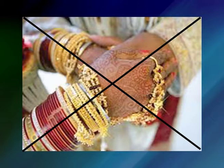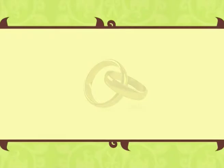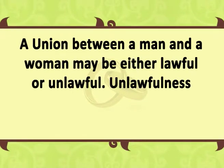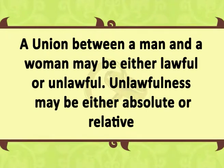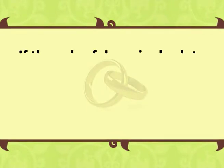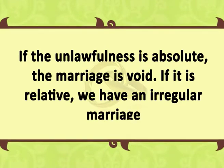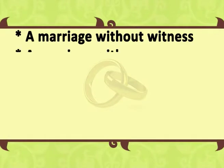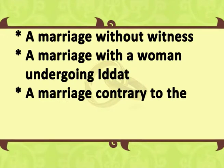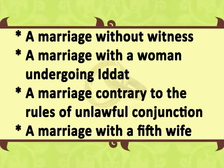Irregular marriage: a marriage is irregular when there is no permanent bar to a marriage. A union between a man and a woman may be either lawful or unlawful. Unlawfulness may be either absolute or relative. If the unlawfulness is absolute, the marriage is void; if it is relative, we have an irregular marriage. The following marriages have been considered irregular: a marriage without witnesses, a marriage with a woman undergoing idat, a marriage contrary to the rules of unlawful conjunction, and a marriage with a fifth wife. The Isna Ashari and the Ismaili schools of law do not recognize this distinction between void and irregular marriages; they treat a marriage as either valid or void.